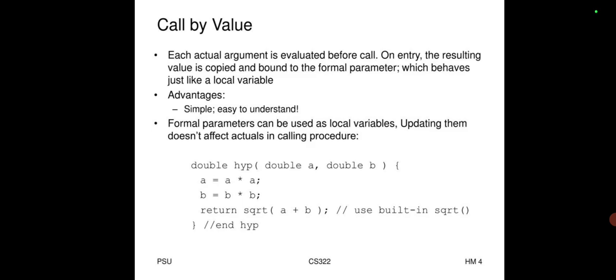Call by value: each actual argument is evaluated before the call. On entry, the resulting value is copied and bound to the formal parameter, which behaves just like a local variable. Advantages: simple, easy to understand. Formal parameters can be used as local variables; updating them does not affect the actual in the calling procedure. Example: double hyp(double a, double b) { a = a*a; b = b*b; return sqrt(a + b); }